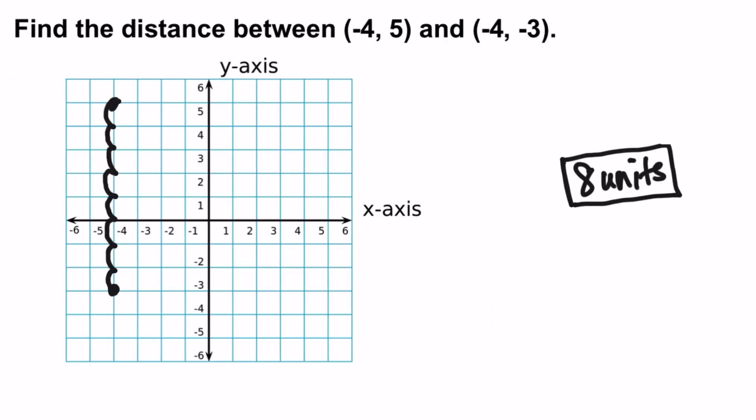Again, let's go back to the first example. We can do the same thing here. We see that the x coordinates are the same. So I'm just calculating the distance between the y coordinates. So I'm going to say the absolute value of 5, plus the absolute value of negative 3. And I get 5 plus 3, and I have 8.